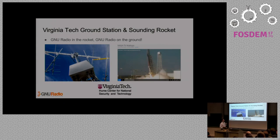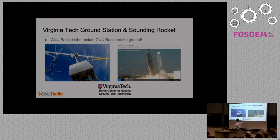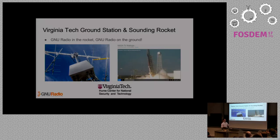Virginia Tech recently ran an experiment where they put an embedded system in a sounding rocket — this is a picture of the rocket taking off from a NASA center. They had a software radio connected to the ground station with this antenna array, and they had GNU Radio running both at the ground station and in the rocket. GNU Radio was their comms link for the rocket, and they maintained the link throughout the event and gathered experimental data. Unfortunately, NASA lost the rocket — it landed somewhere in the ocean and they never recovered it, but they did get useful data before it disappeared.